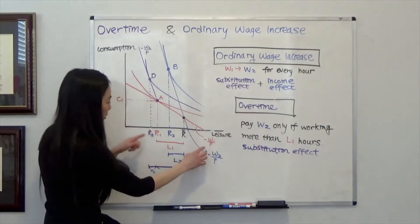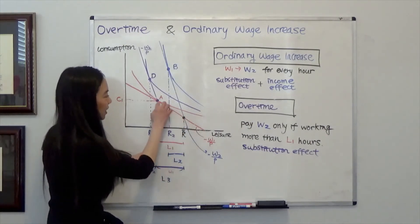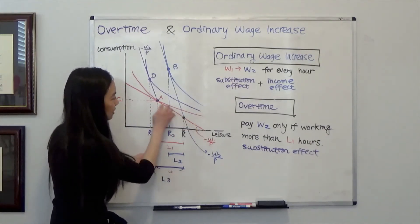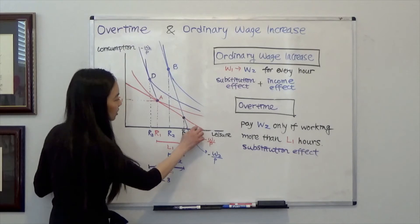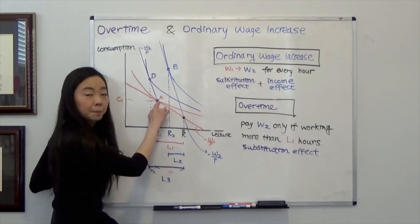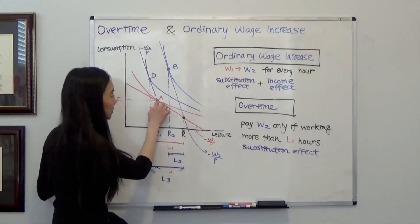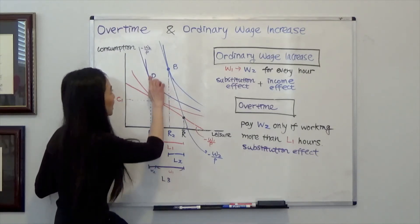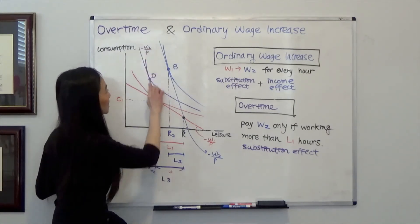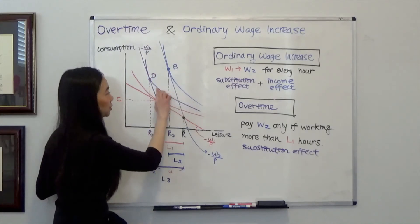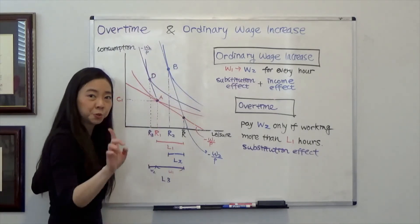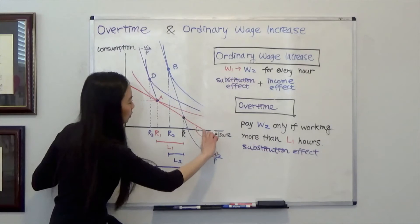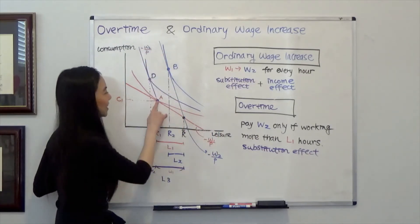With overtime, for the first L1 hours I work, I am getting paid this rate W1. So my budget line is still here, the red line. But after L1 hours, I am going to get paid a higher rate. So it's going to become steeper like that. You can see this purple line is parallel to this blue line. So my new budget line with overtime is going to look like this. With a kink at point A.